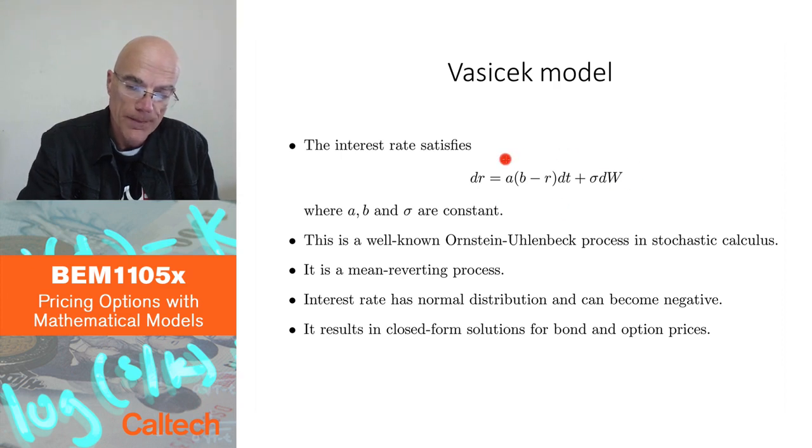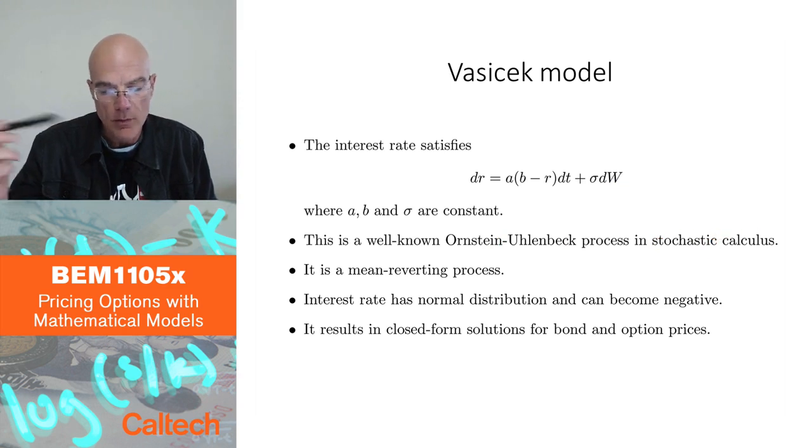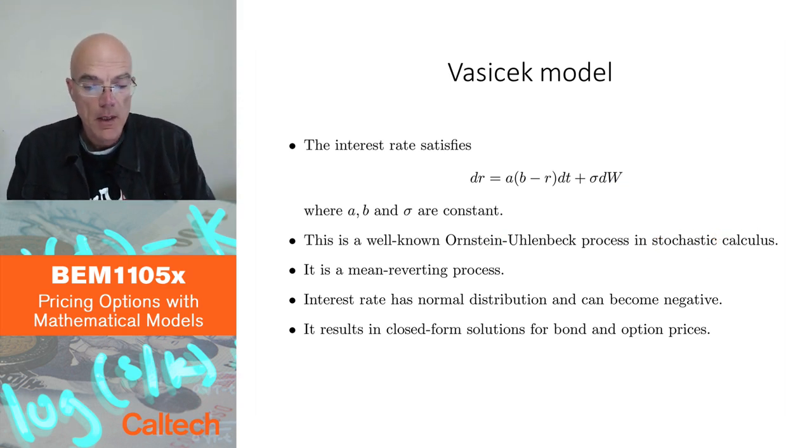It can be shown, so okay, first of all, this process is not invented by Vasicek. It's called the Ornstein-Uhlenbeck process from stochastic calculus and statistical mechanics. It has two properties, main properties.